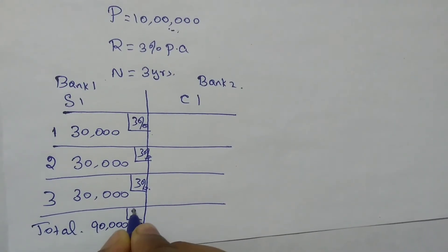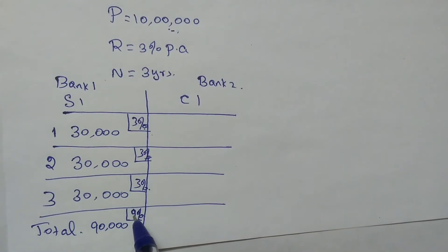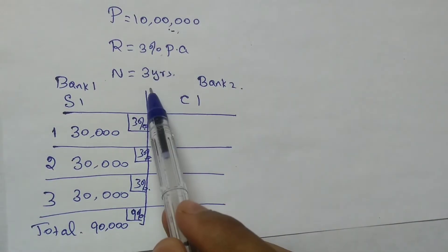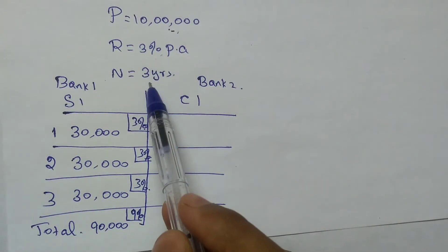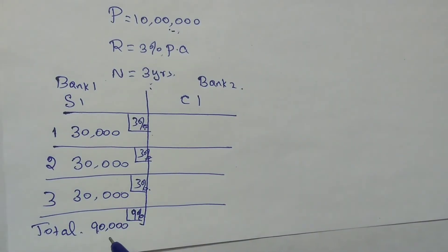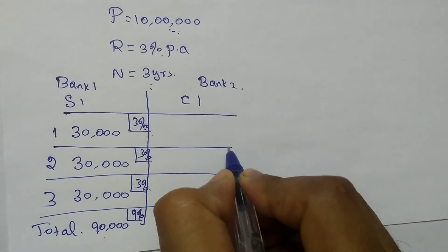This 90,000 is 9% — that is 3 + 3 + 3. To find the simple interest you simply multiply the rate of interest by the number of years: 3 × 3 = 9%, and 9% of 10 lakh is 90,000 rupees. This 90,000 rupees is the simple interest. The total amount you have to settle with the bank at the end of three years is 10 lakh + 90,000 = 10 lakh 90,000 rupees.